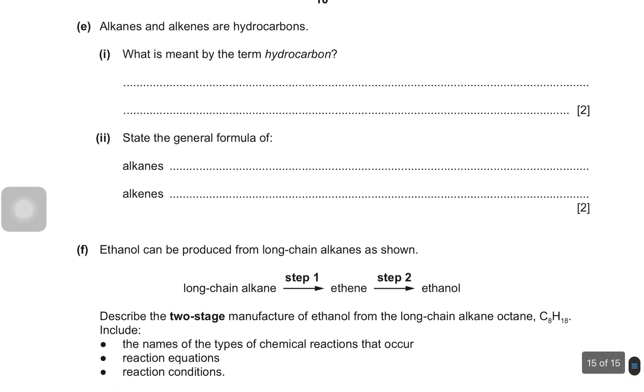Alkanes and alkenes are hydrocarbons. What's meant by the term hydrocarbons? So it's compounds that contain hydrogen and carbon atoms only. State the general formula of alkanes which is CnH2n+2. And alkenes is CnH2n.